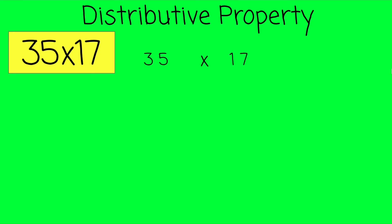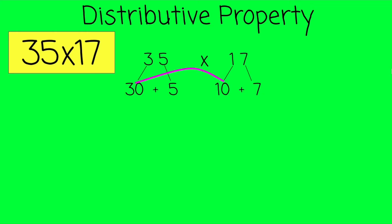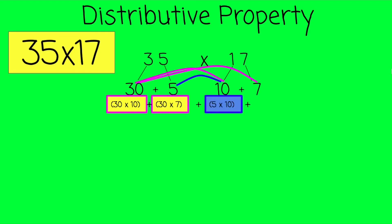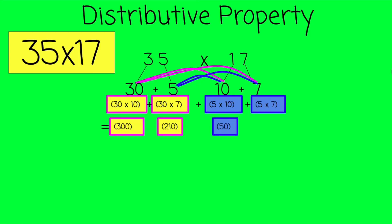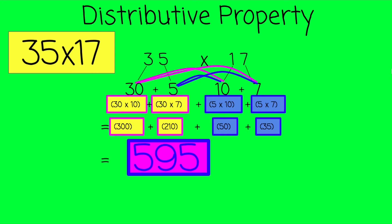Let's talk about our first strategy: the distributive property. 35 times 17. It will be helpful to write 35 and 17 in expanded form. That 3 represents 30 because it's in the tens column, and that's just 5. That 1 represents 10, and that 7 is just 7. Let's multiply: 30 times 10, then 30 times 7, next 5 times 10, and 5 times 7 — which gives us 300, 210, 50, and 35. Then we add them all together for a final product of 595.